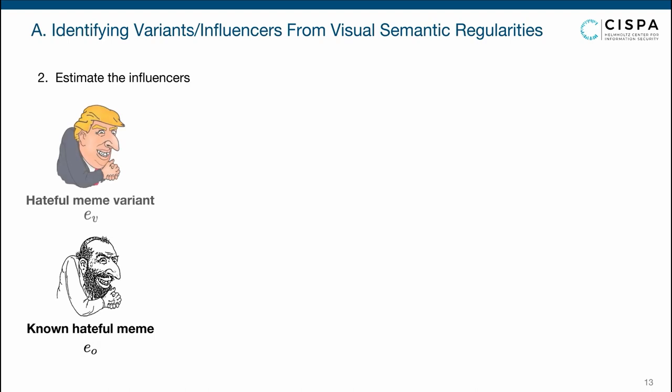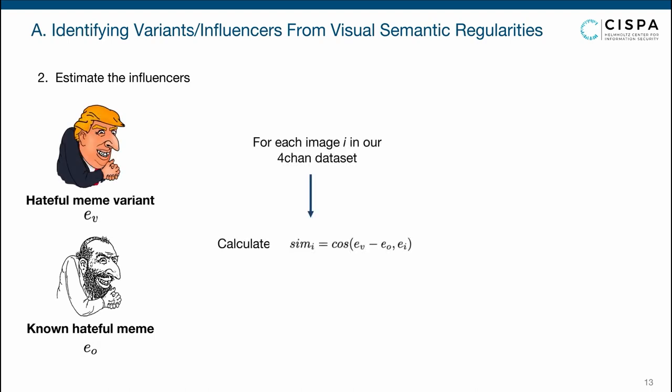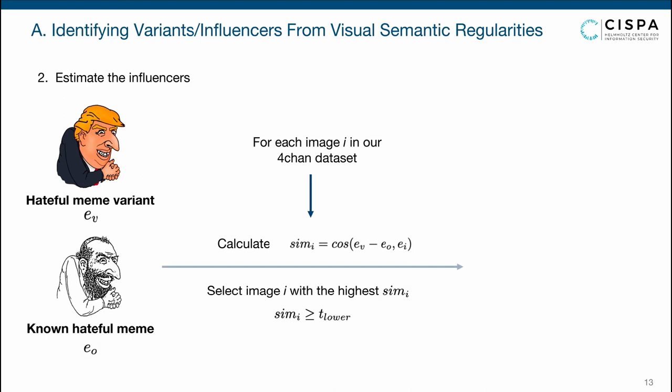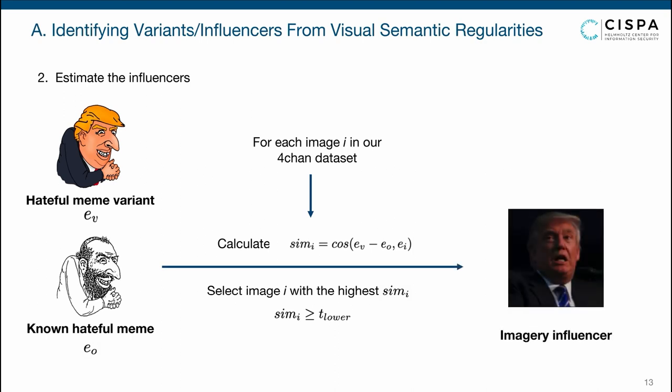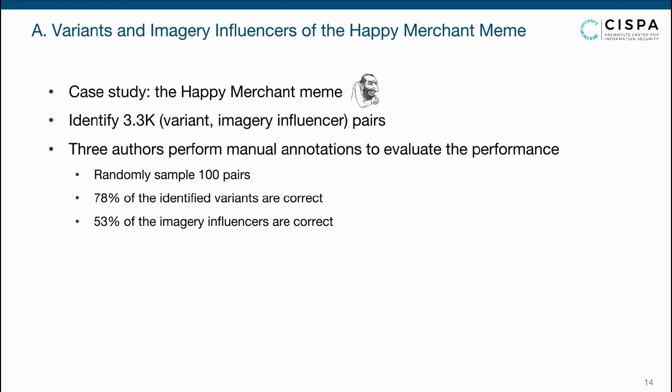Given a potential variant, we subtract the known hateful meme embedding from the variant image embedding and compute cosine similarities between this difference embedding and all image embeddings in our dataset. We select the image with the highest similarity, and if the similarity value exceeds a threshold, we consider this image a potential imagery influencer. We applied this pipeline using Happy Merchant as a case study and identified more than 3,000 variant-influencer pairs. Manual annotation of a random sample of 100 pairs found that 78% of identified variants and 53% of influencers were correctly identified.